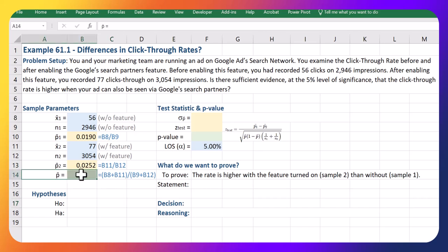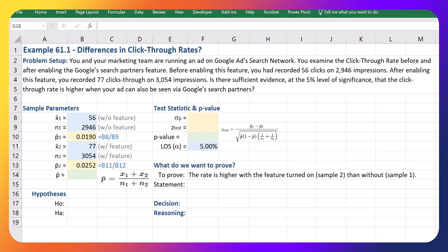Now to do our test, the next thing we need to do is get what's called our p-bar or our pooled proportion. I'm just gonna pause the video and bring up the formula for that calculation.